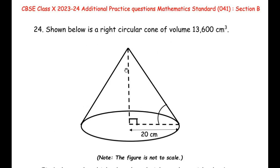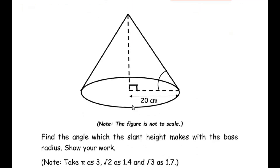This question is from surface areas and volumes and also includes trigonometry. A right circular cone is a cone which stands at 90 degrees to the base. The volume of this cone is given as 13,600 cubic centimeters. From the diagram, the radius r is given as 20 centimeters. We have to find the angle which the slant height makes with the base radius.